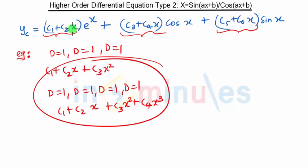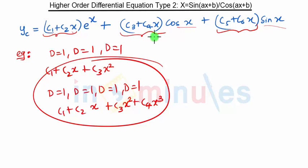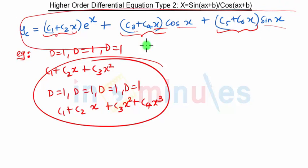Similarly, for imaginary roots we have cosine and sine terms. Since the imaginary roots are repeated twice, there will be two constants and one constant multiplied by x. This completes our complementary function.